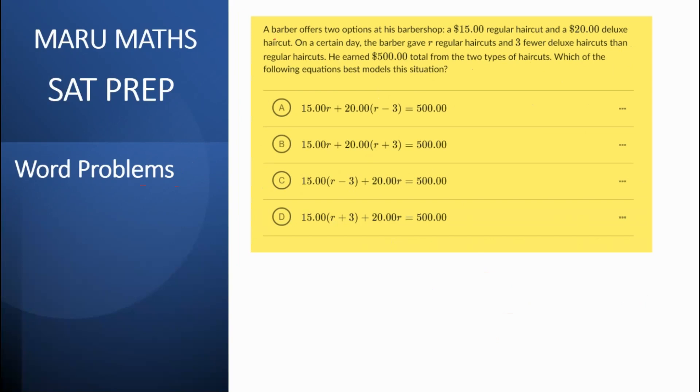Next question is a barber offers two options at his barber shop. There is $15 for the regular haircut and $20 for the deluxe. If we have R regular haircuts and 3 fewer deluxe. So I am going to write R is regular. Then number of deluxe haircuts would be R minus 3.